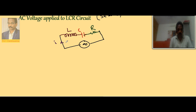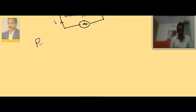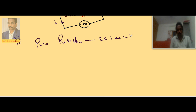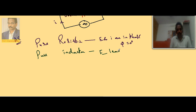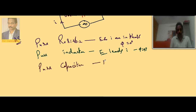Let I be the current passing through them, since in a series combination the total current is the same. For a pure resistor connected to an AC source, E and I are in phase — phase difference φ is zero degrees. For a pure inductor, E leads I with a phase difference of 90 degrees.